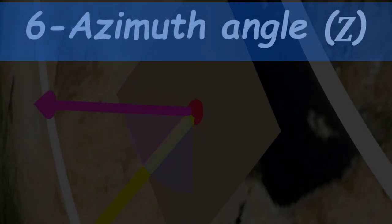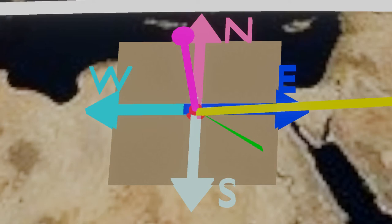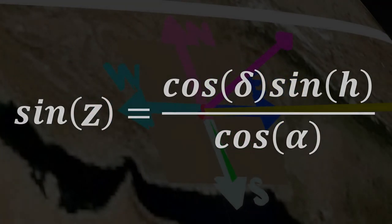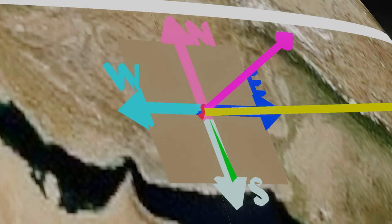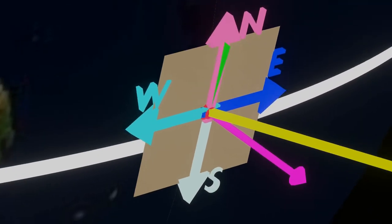Next, the azimuth angle. If we project the sun ray onto the ground plane and draw a compass pointing in the four directions — north, south, east, and west — the angle formed between the projection of the sun ray and the south direction is called the azimuth angle, and it can be calculated using a specific formula. At noon in the northern hemisphere, the azimuth angle is zero and the sun points in the south direction, while in the southern hemisphere the sun points north.